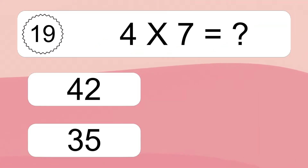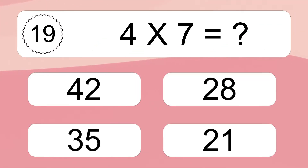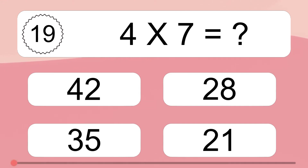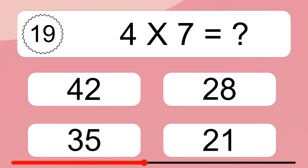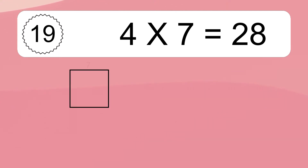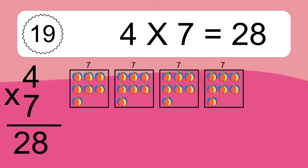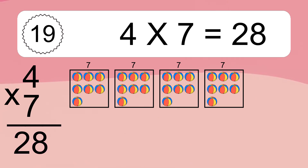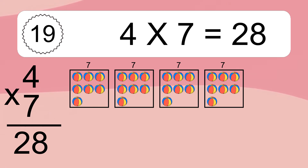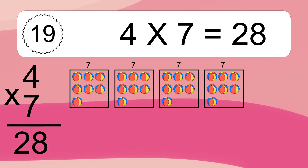Four times seven equals what? Four times seven equals 28. We have four boxes and each box has seven colorful balls inside. If you count all the balls in all the boxes together, you will have four times seven balls. This equals 28 balls.